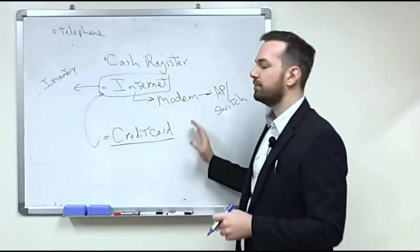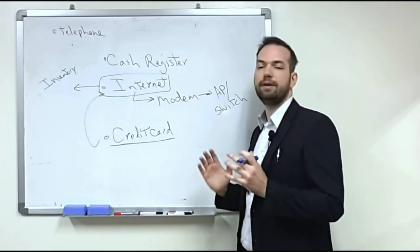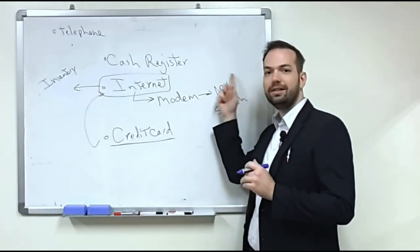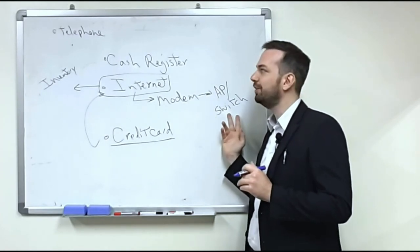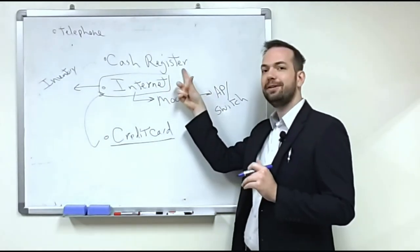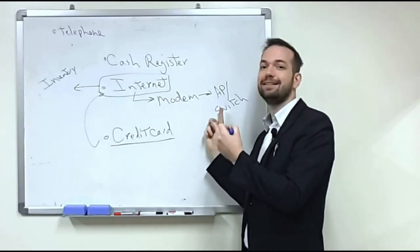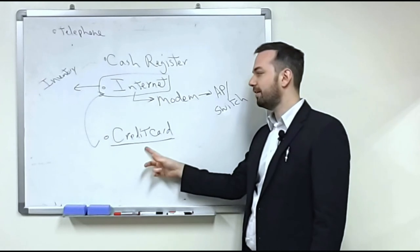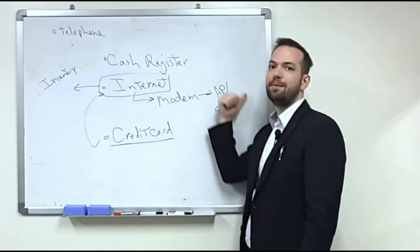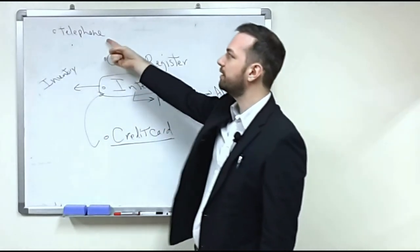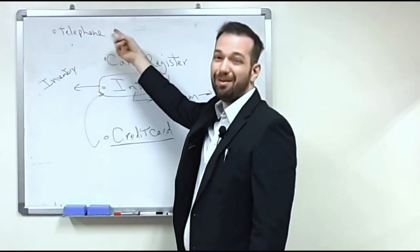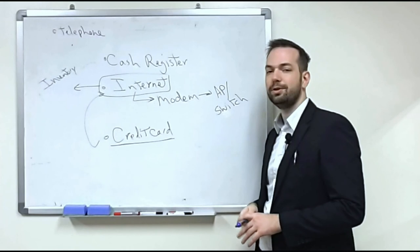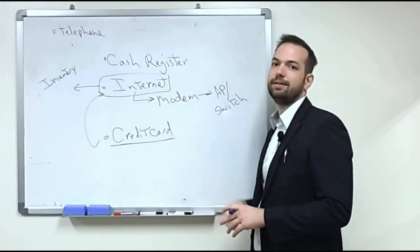So the next time you go into a small business, try to look around for, do they have an internet connection connected to an access point or a switch? Do they have a digital cash register also connected to the same access point or switch? And do they take credit cards? Whenever they take credit cards, does it go through a modern internet connection or are they using a telephone line? Some still use telephone, but very few. So next time you go into a small business, think about these kinds of things.